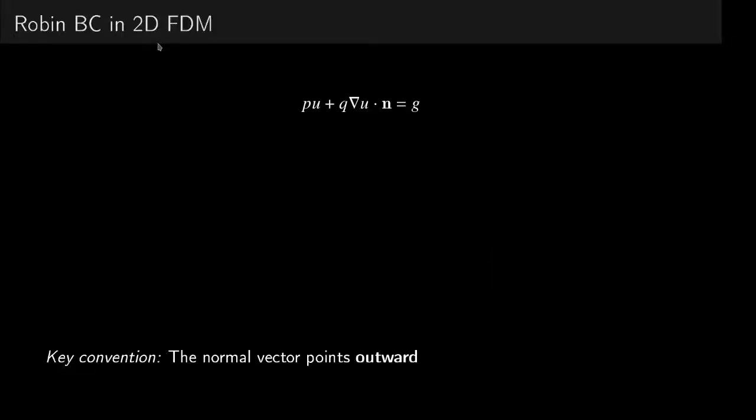This is my short lecture on finite difference method in two dimensions. Here we want to look at how to incorporate the Robin boundary condition data into the FDM formulation.